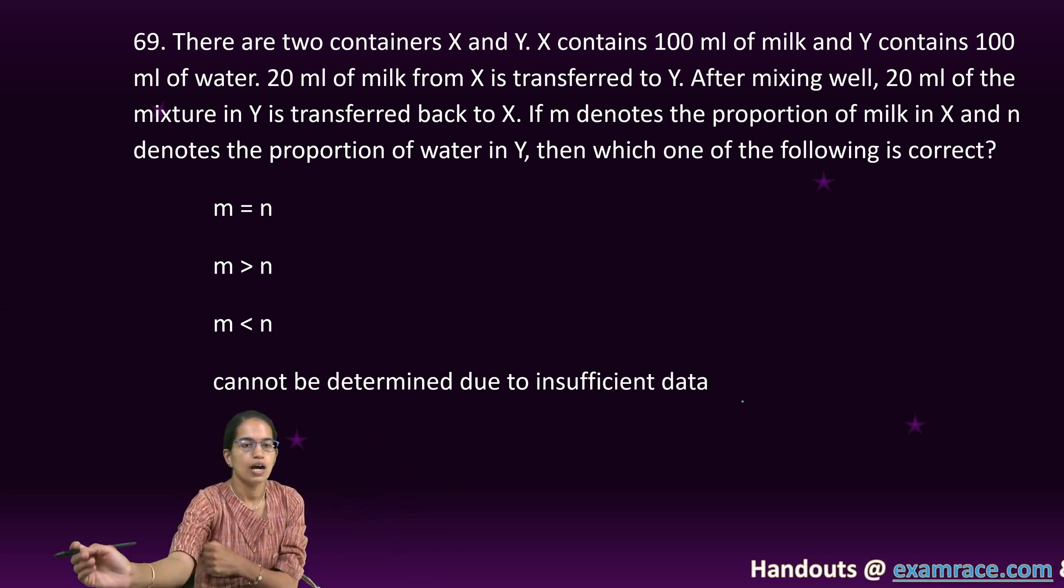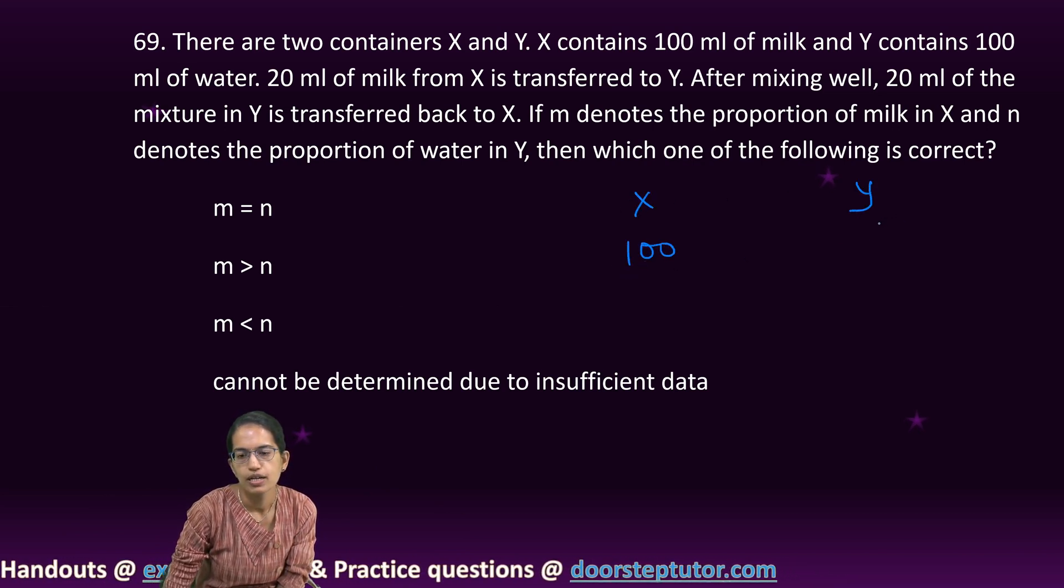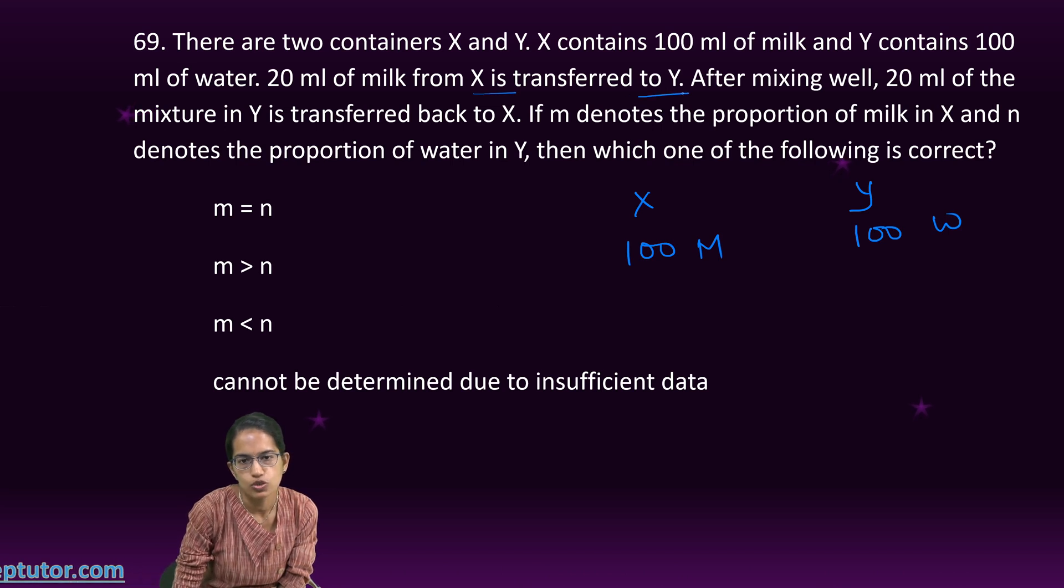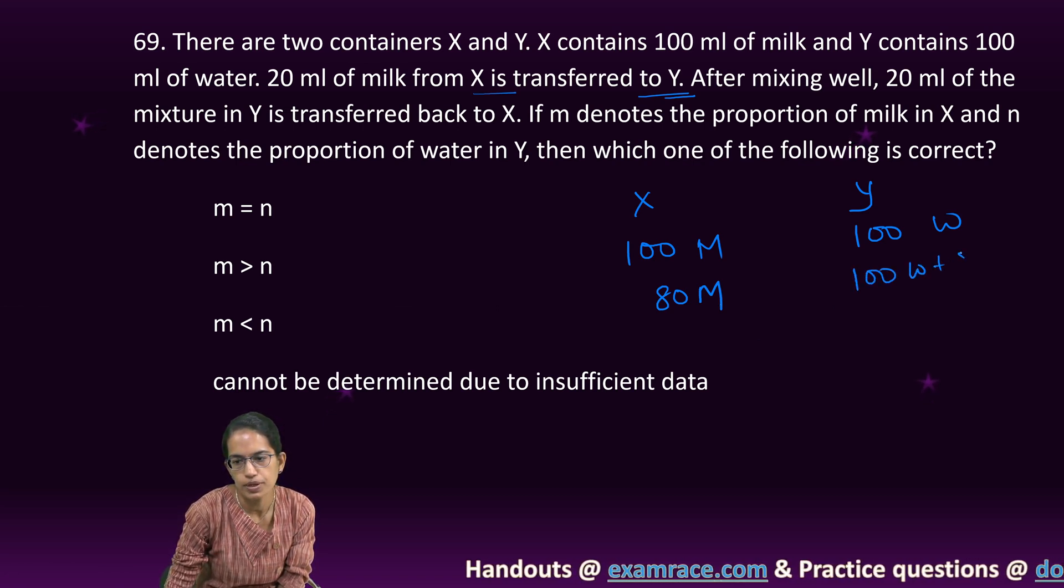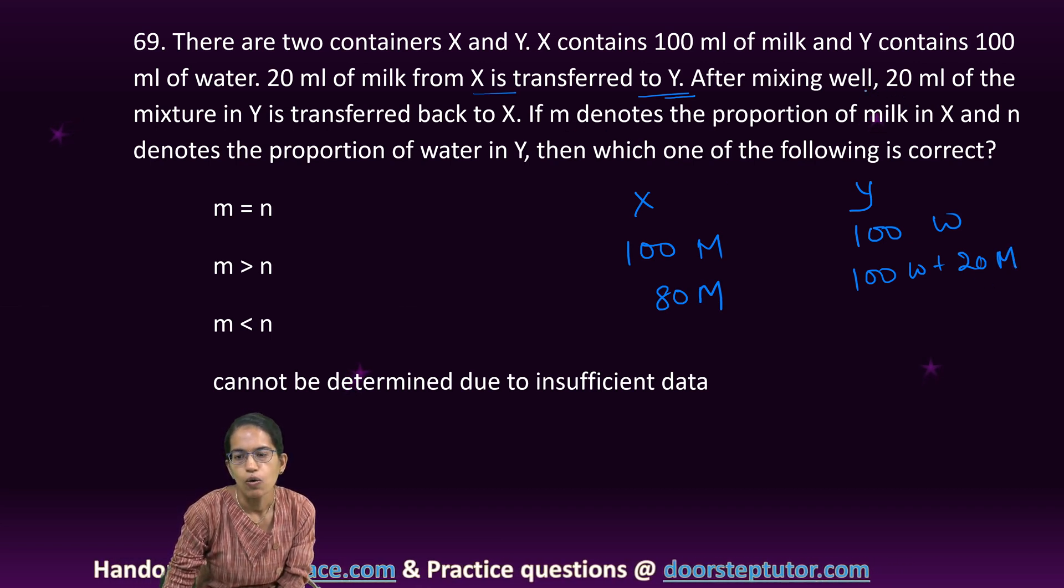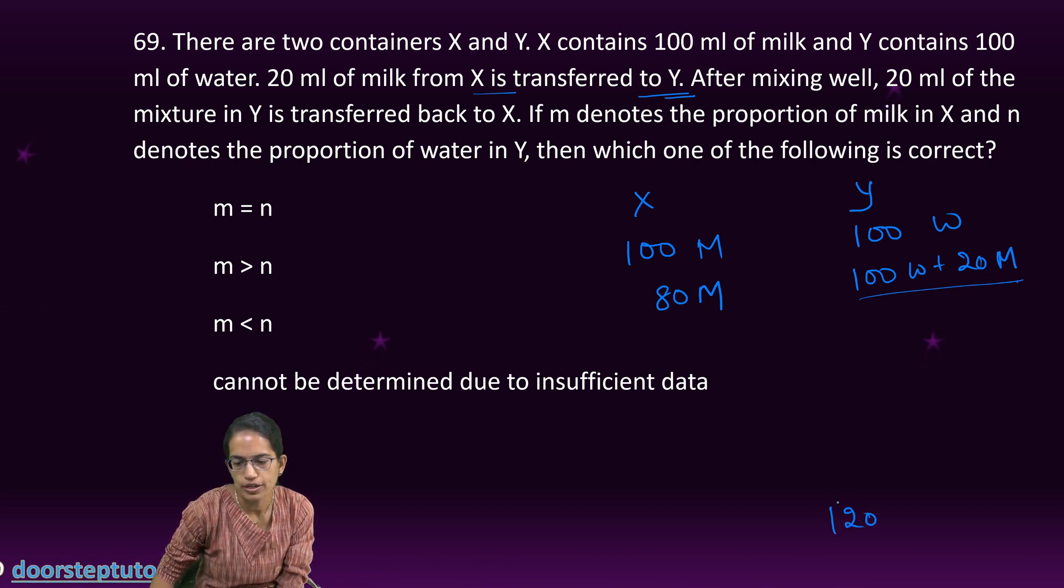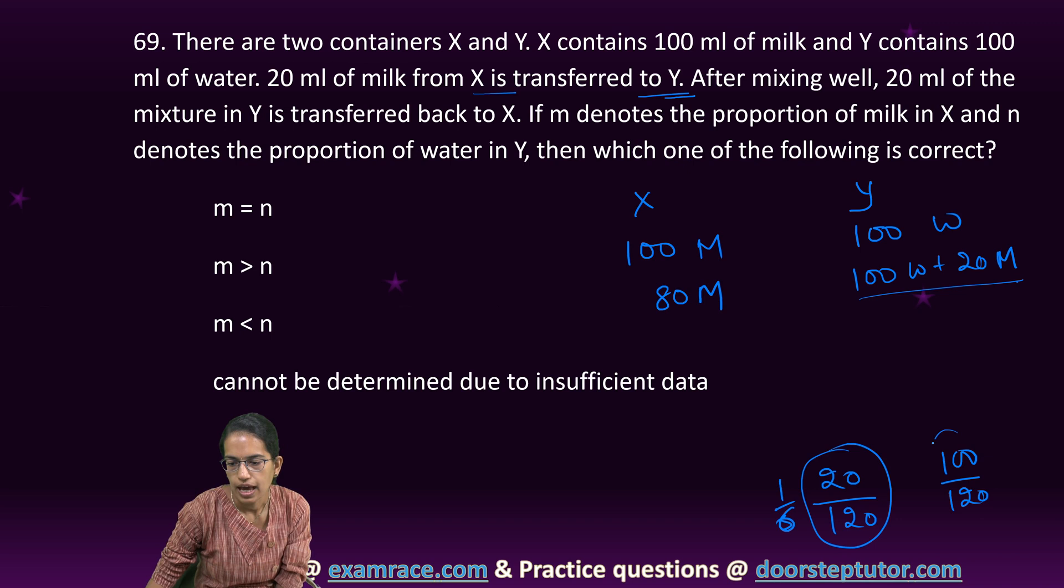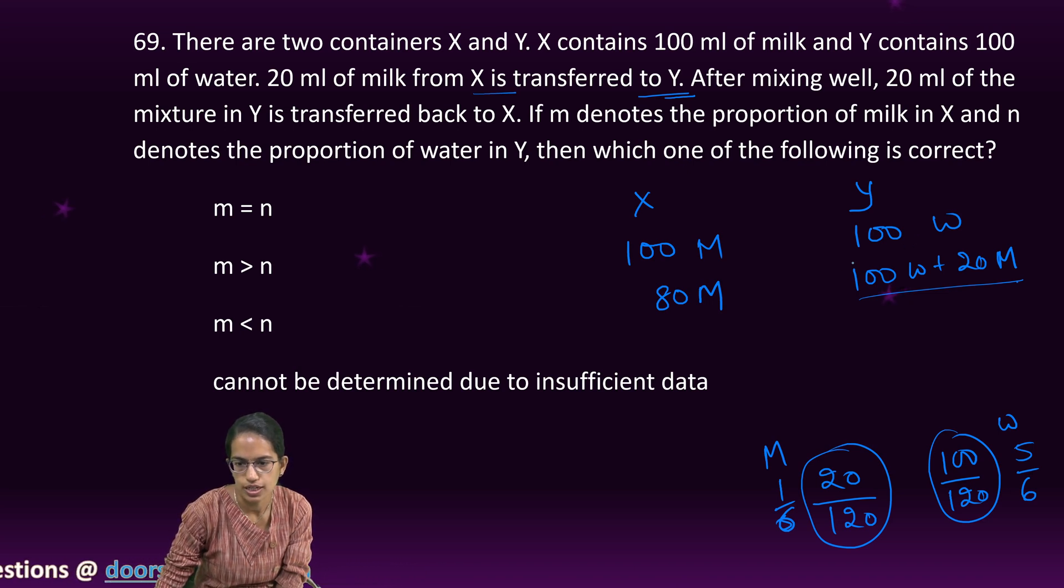There are two containers X and Y. X has 100 ml of milk, Y has 100 ml of water. 20 ml of milk is transferred from X to Y. So this becomes 80 ml of milk and this becomes 100 ml of water plus 20 ml of milk. The total is 120 ml.